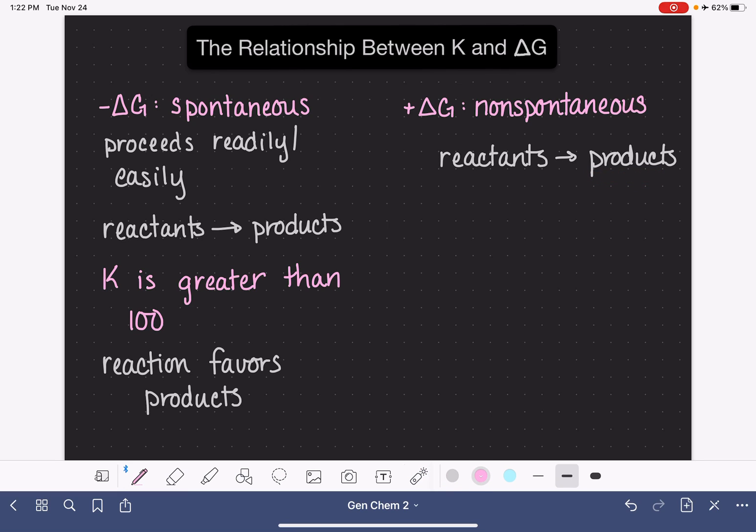This is going to result in us having a very small value of K. And we define a small value of K as one that is less than 0.01.